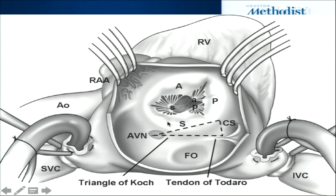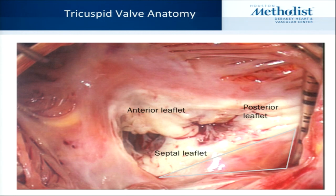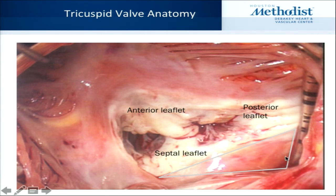It becomes more difficult to avoid that zone when you're doing a tricuspid valve replacement, because you do need sutures in that area, but you need to be extremely careful to place them superficially. You should accept and explain to the patient ahead of time that the risk of inducing block requiring a pacemaker is much higher with tricuspid valve replacement. This is an actual anatomic depiction showing the posterior leaflet, the triangle of Koch bounded by the coronary sinus, the septal leaflet, and the tendon of Todaro.